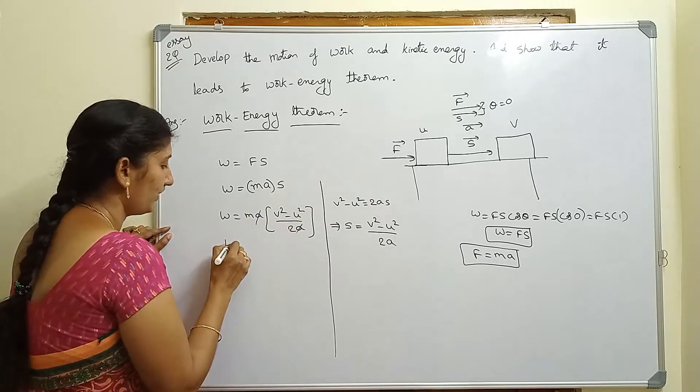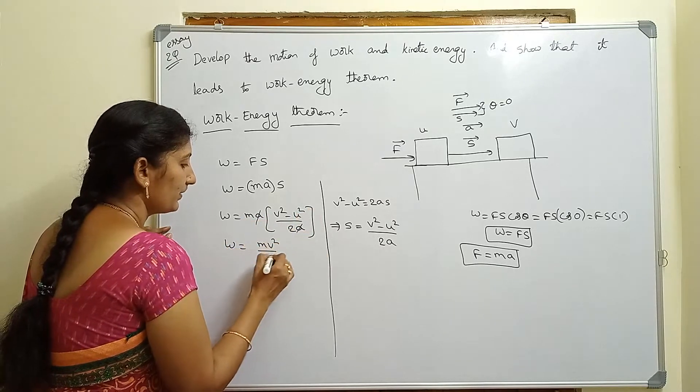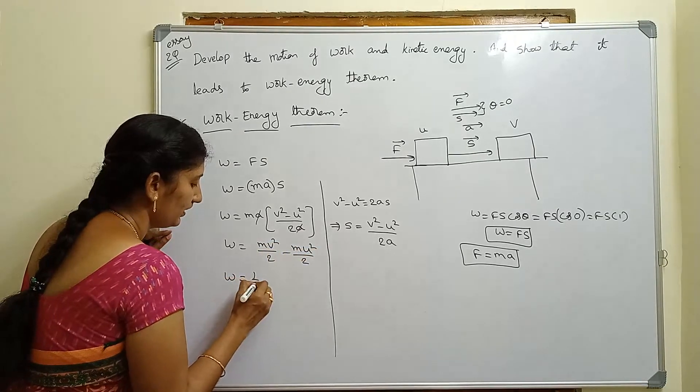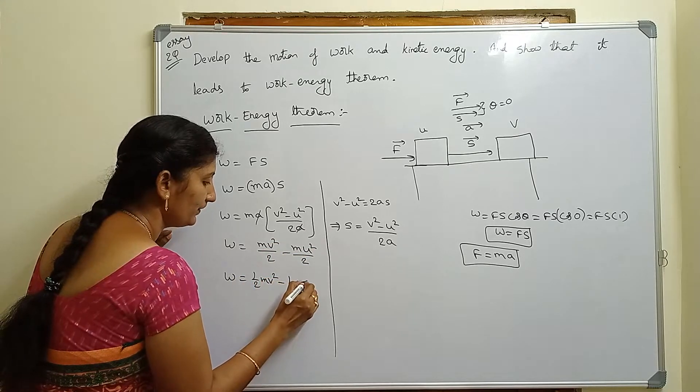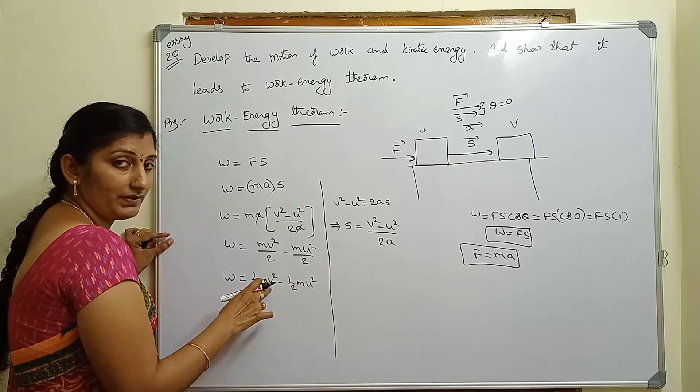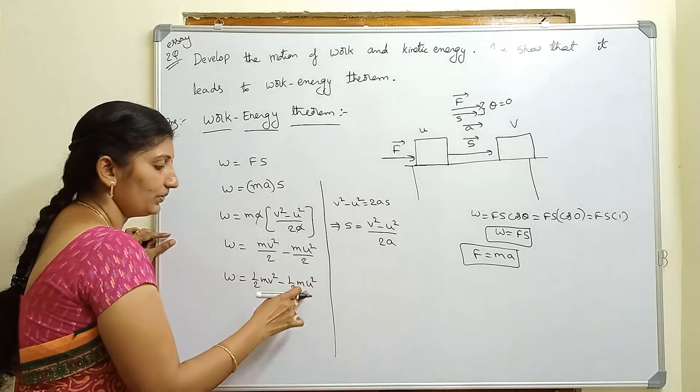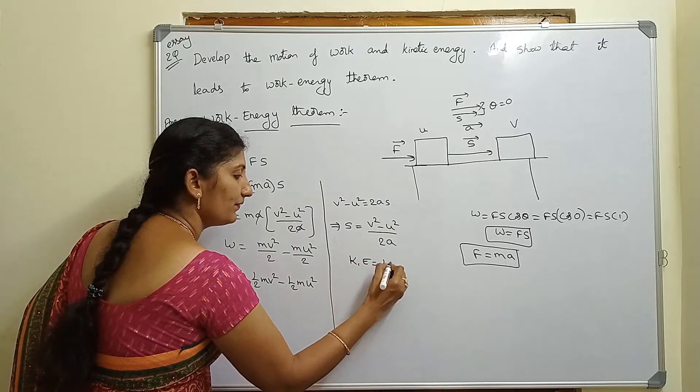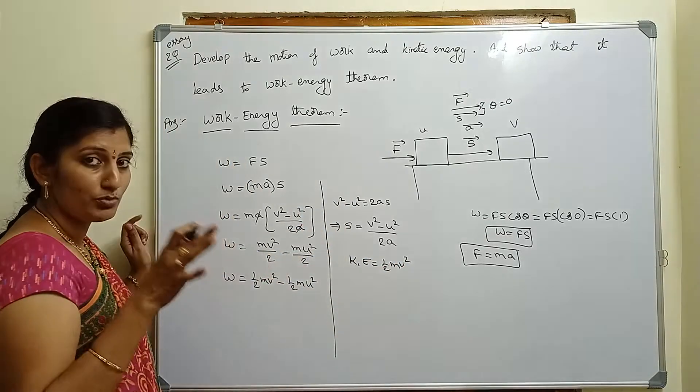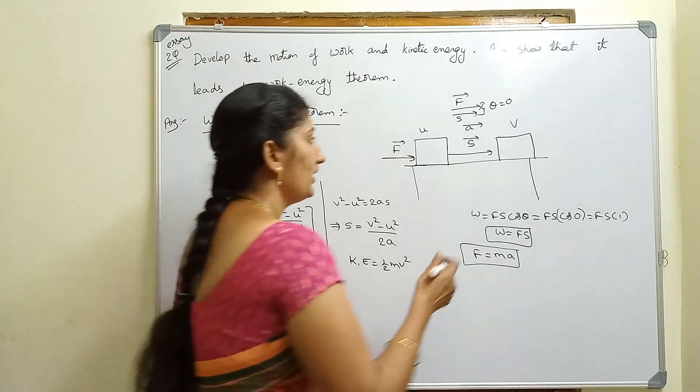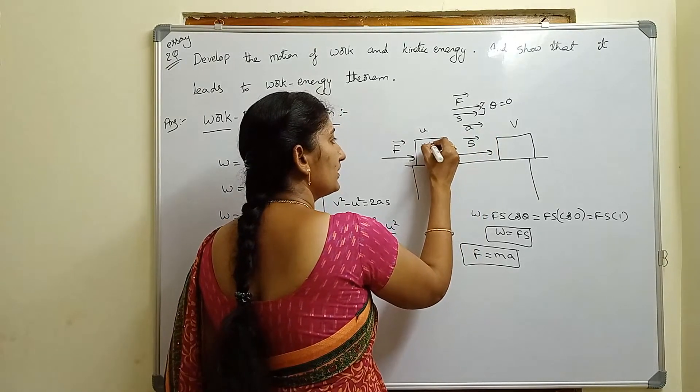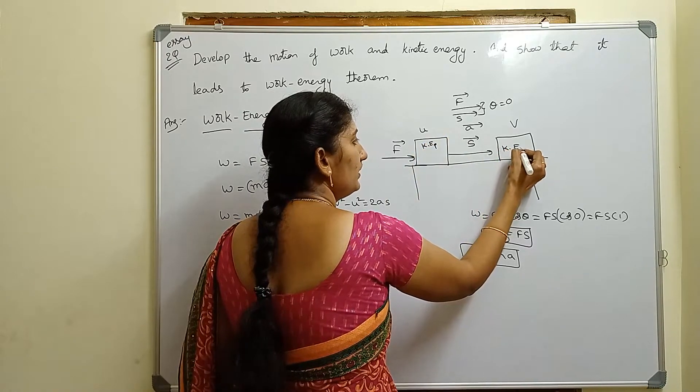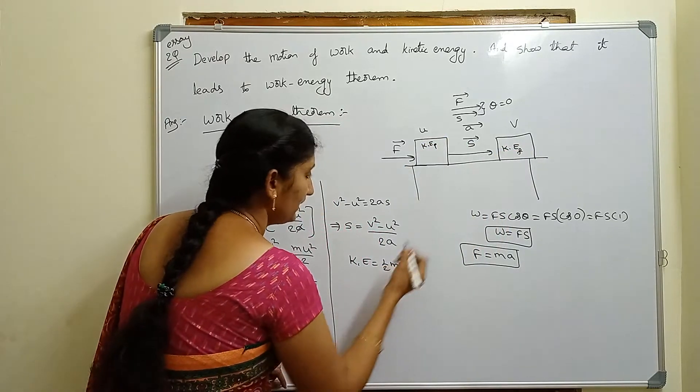The acceleration value cancels out. So finally, W equals m times (V² by 2 minus U² by 2), meaning W equals half mV² minus half mU². Here V is the final velocity. U is the initial velocity.